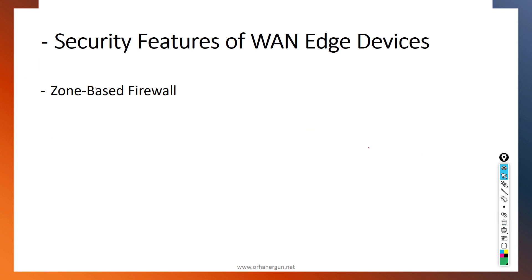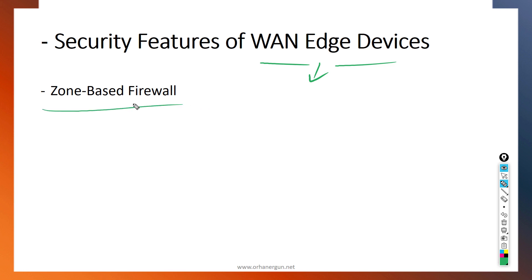Finally, I will talk about the security features of the WAN edge devices. These devices also function as all-in-one security boxes, featuring zone-based firewall, IPS, URL filtering, and more. I will configure the zone-based firewall to show you how to create and apply these security features to the WAN edge devices.